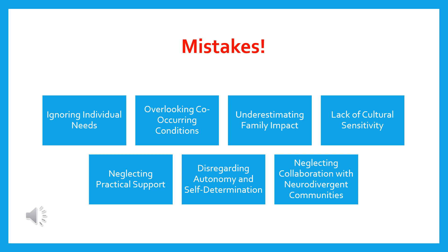The first mistake is ignoring individual needs. One mistake is assuming that all neurodivergent individuals have the same needs, expectations, or experiences. It's really important to recognize the uniqueness of each individual and their specific strengths, challenges, and preferences. Avoid making assumptions and ensure that therapy plans are tailored to meet the individual's needs.